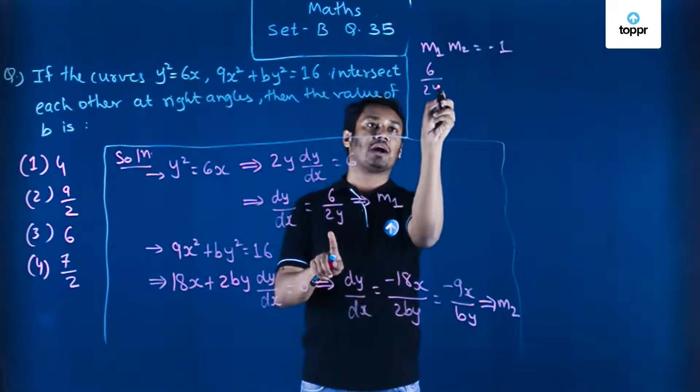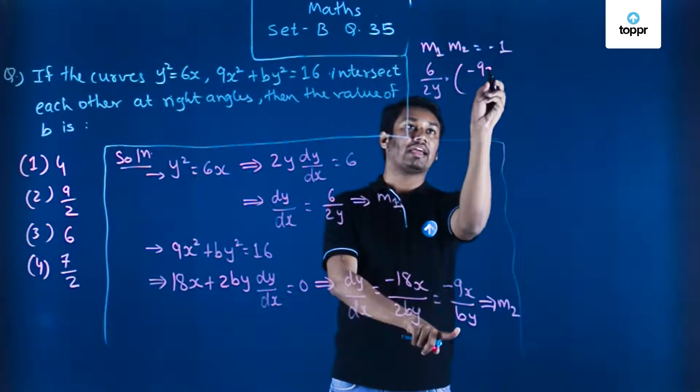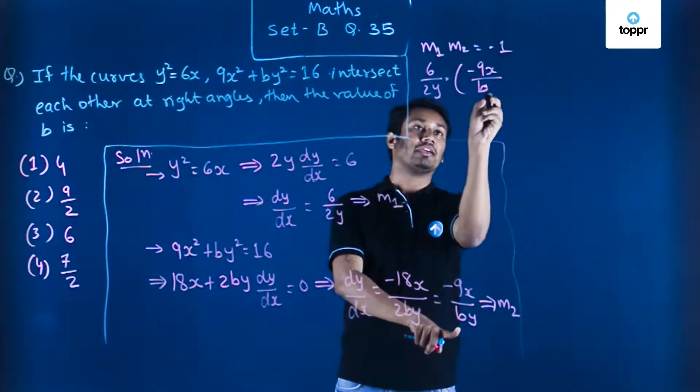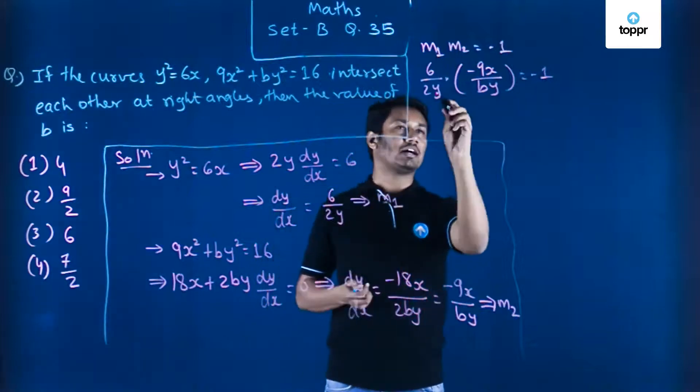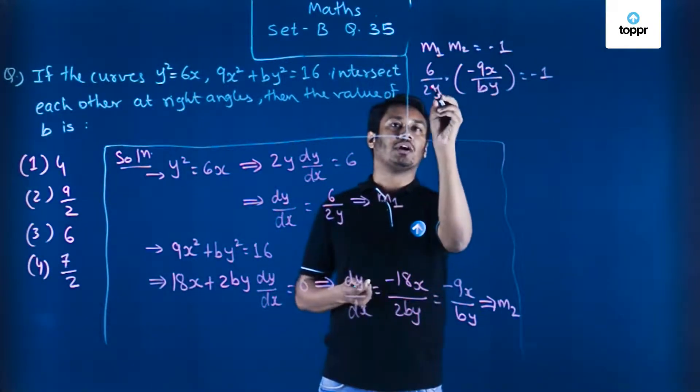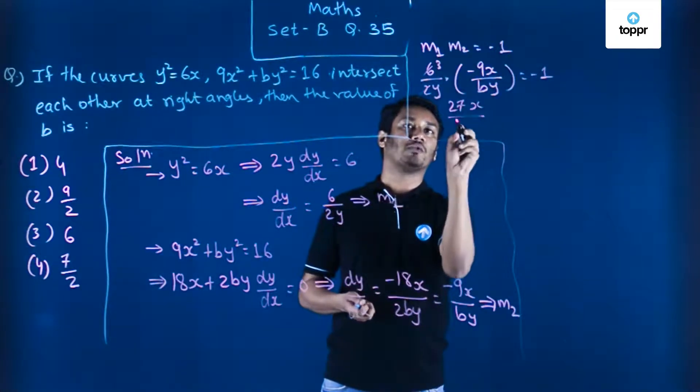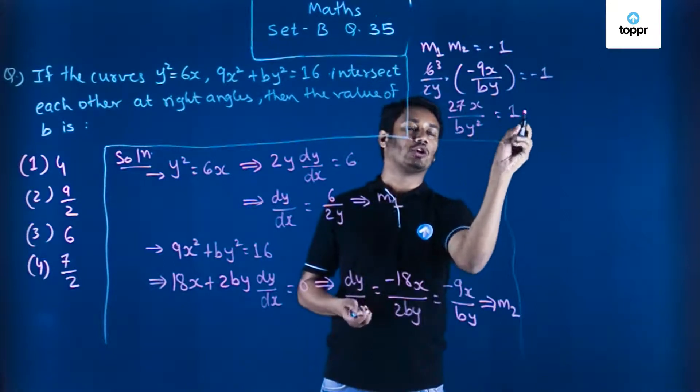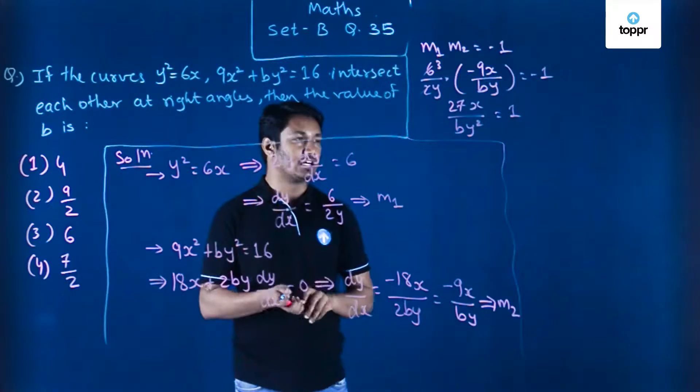This gives me 6/2y × -9x/by = -1. Now you can see that the minus sign will cancel out, and this will further give me 3, so this is 27x/by² = 1. Now you can see that here we have x/y² term.